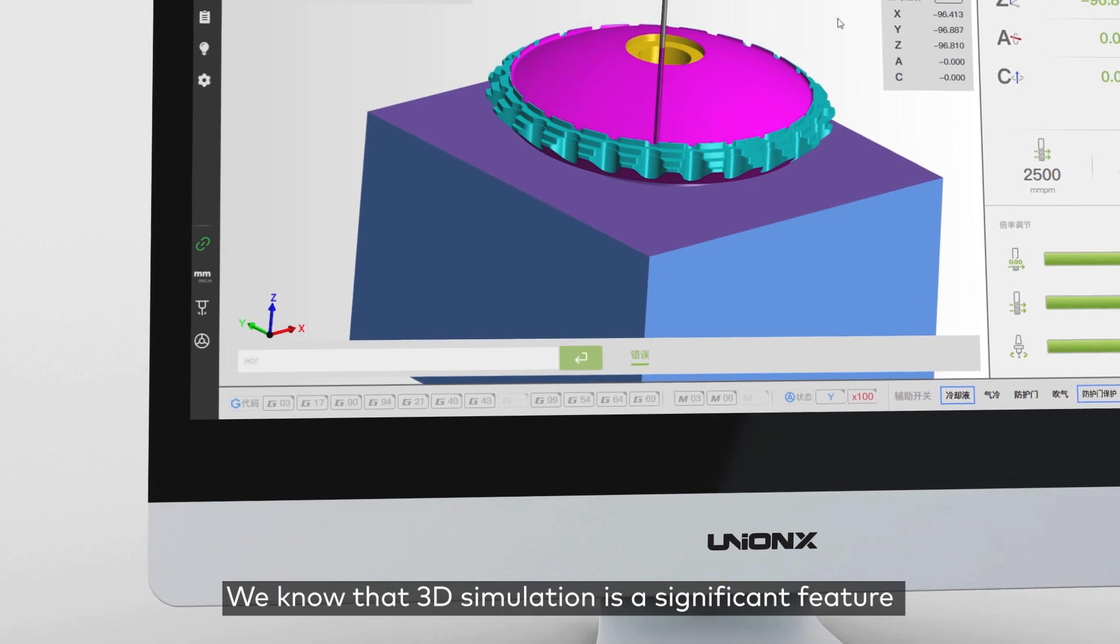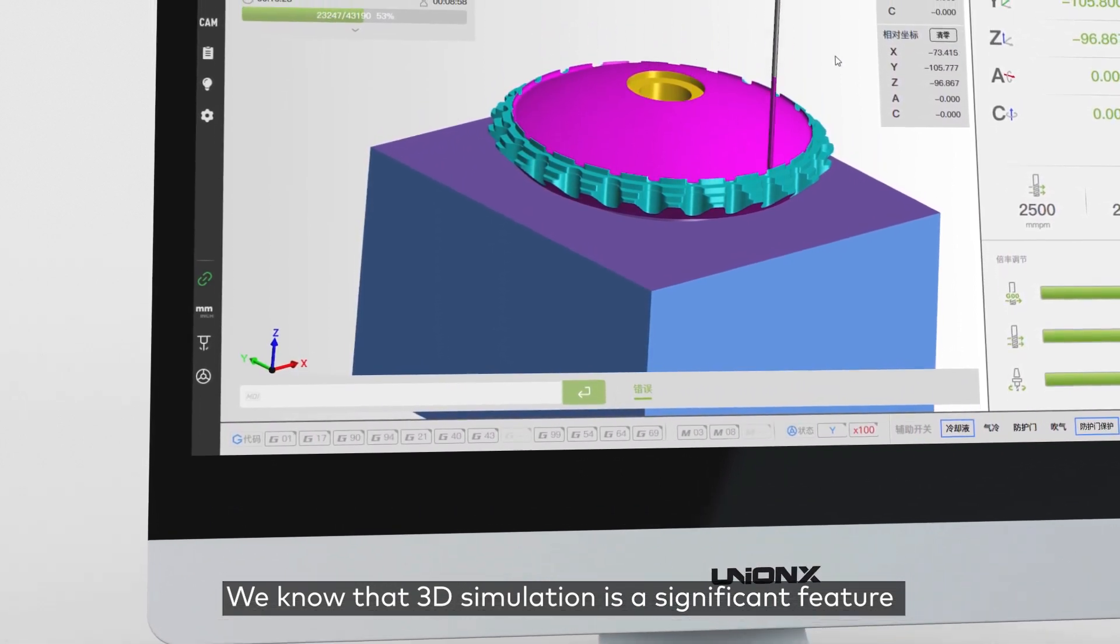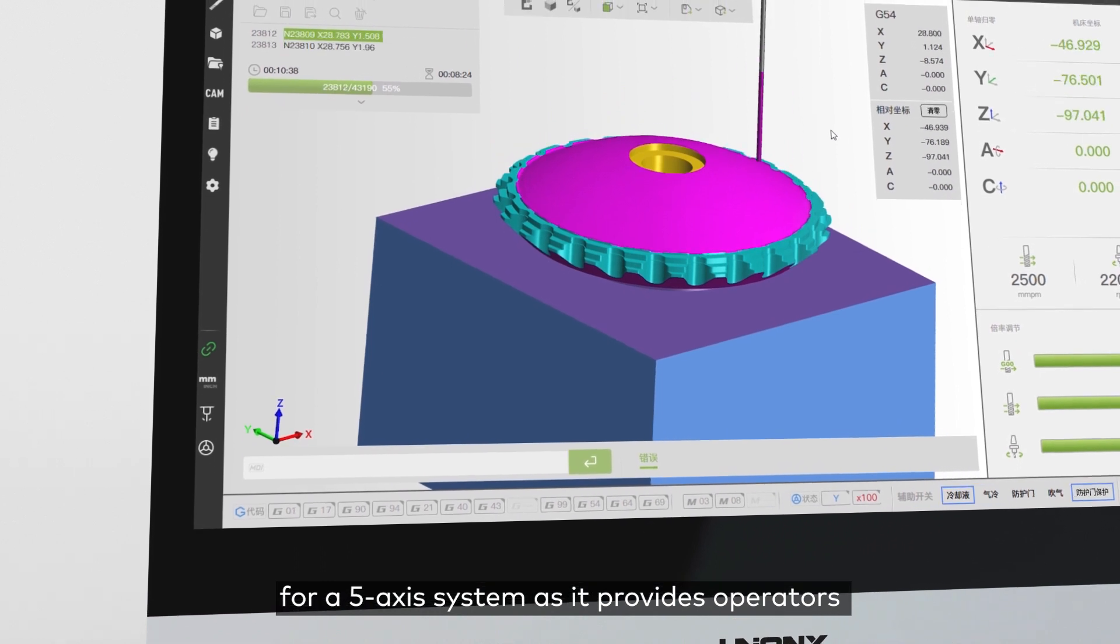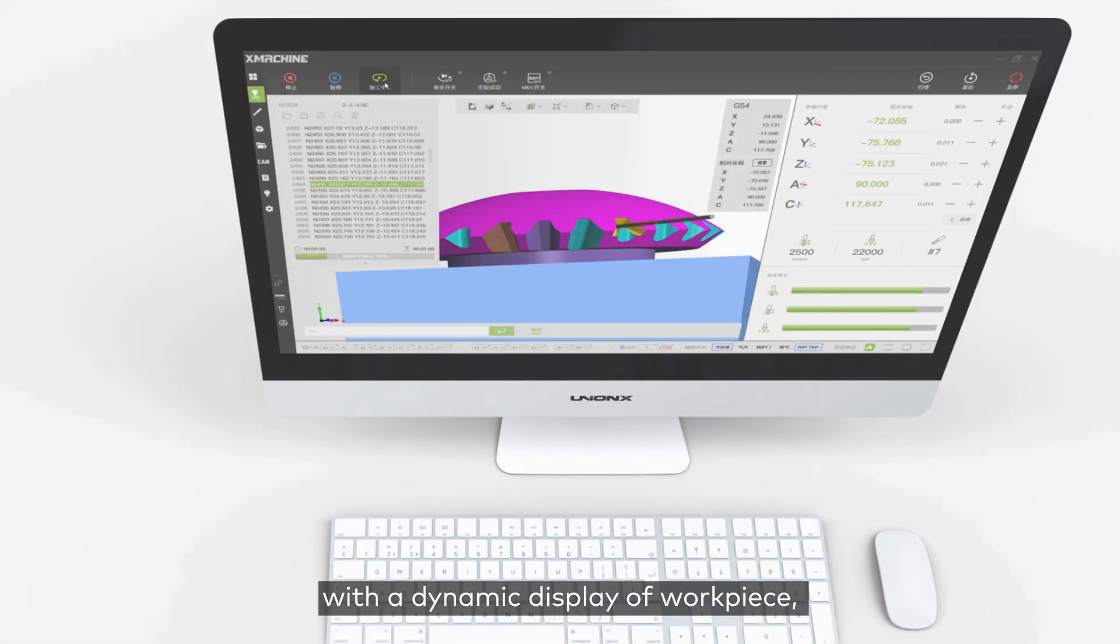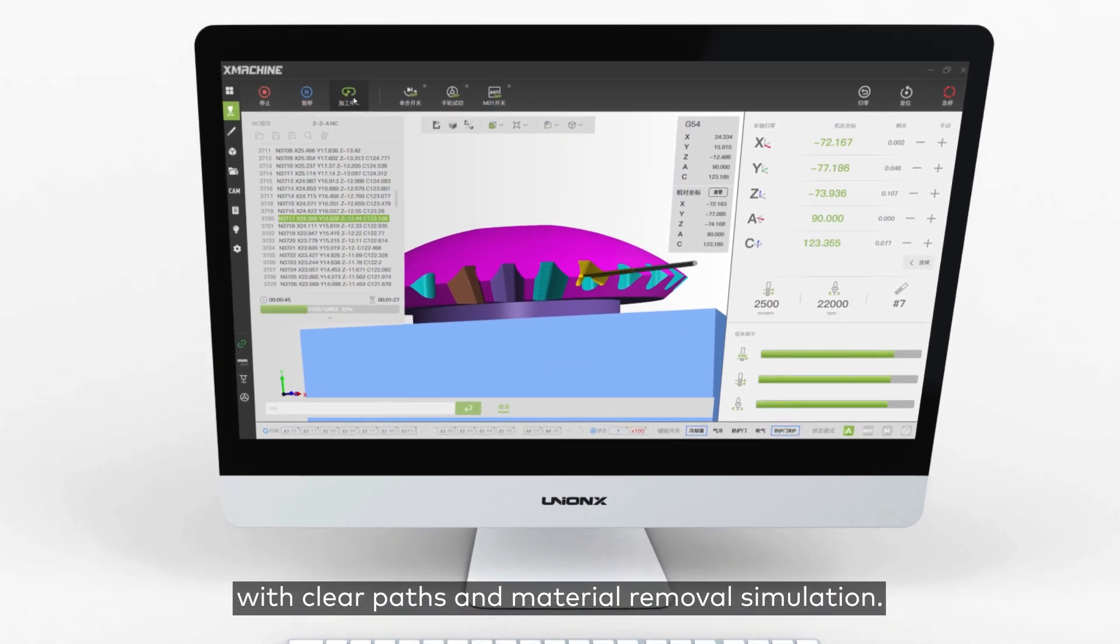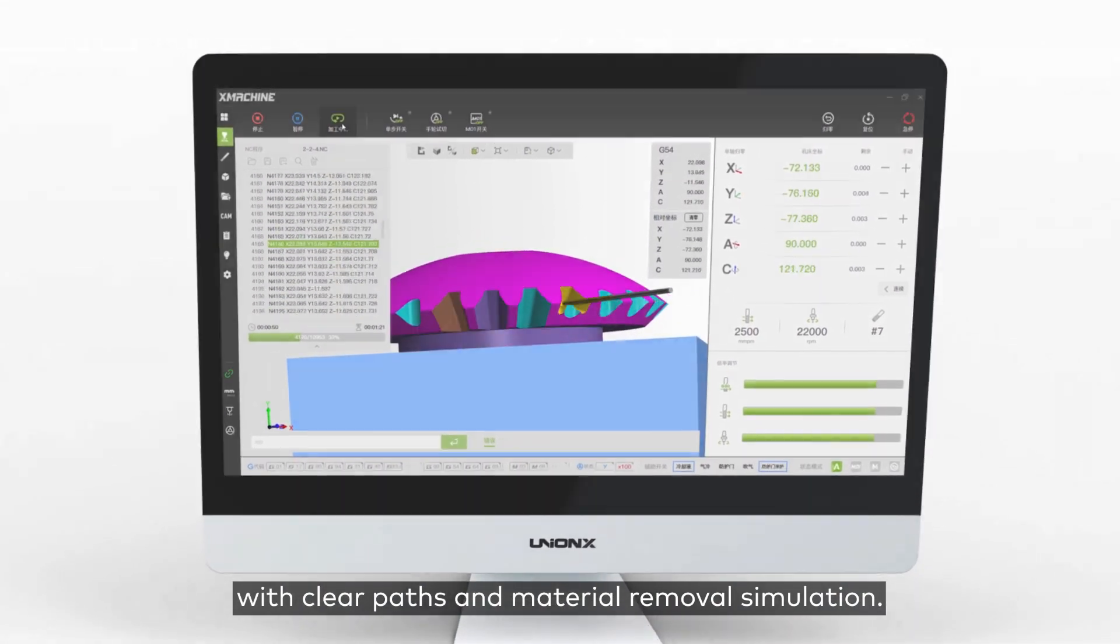We know that 3D simulation is a significant feature for a 5-axis system as it provides operators with a dynamic display of workpiece, cutting tools, and machine tool components in motion with clear path and material removal simulation.